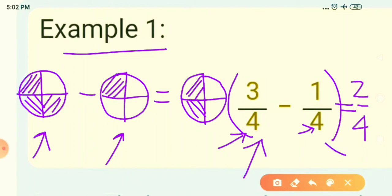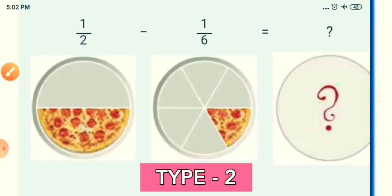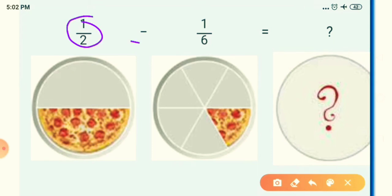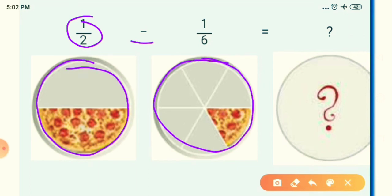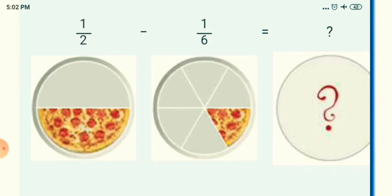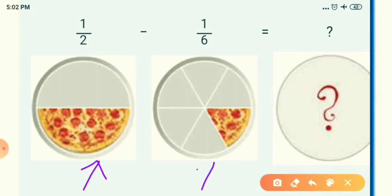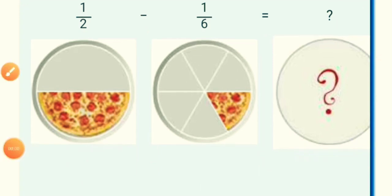That was the first type of question where you get equal denominators in both fractions. Now you will see a picture with different divided parts. Here we have 1 upon 2 minus 1 upon 6. You can see the parts are not divided equally — the first picture has 2 parts and the second has 6 divided parts. In the first step, both pictures should have equal divided parts, and we don't have that, so we have to make them equal.